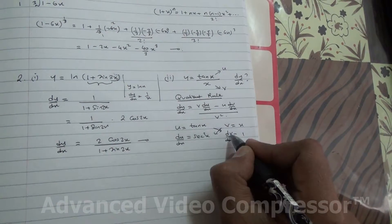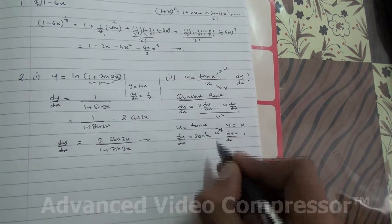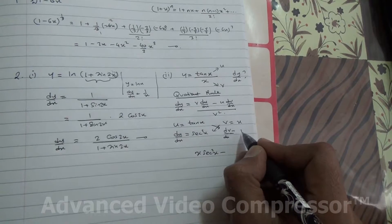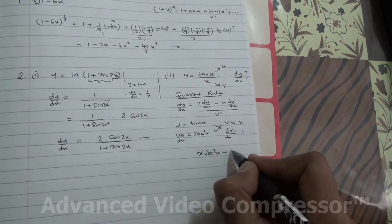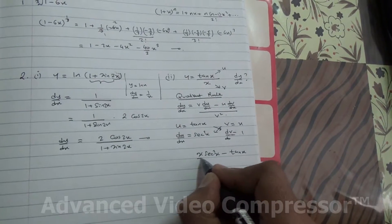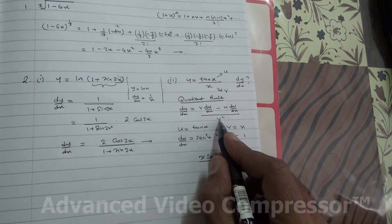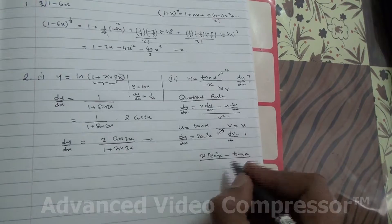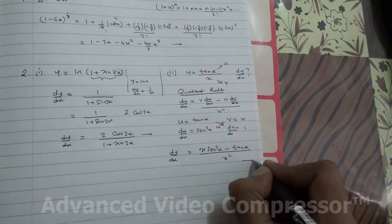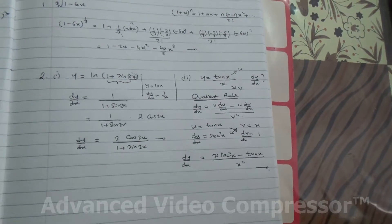So, v du by dx minus u dv by dx. v du by dx is x times sec square x minus u dv by dx, tan x times 1 is tan x, and all of that divided by v square. And v is x, therefore divided by x to the square. And here is dy by dx for the second part of the question.